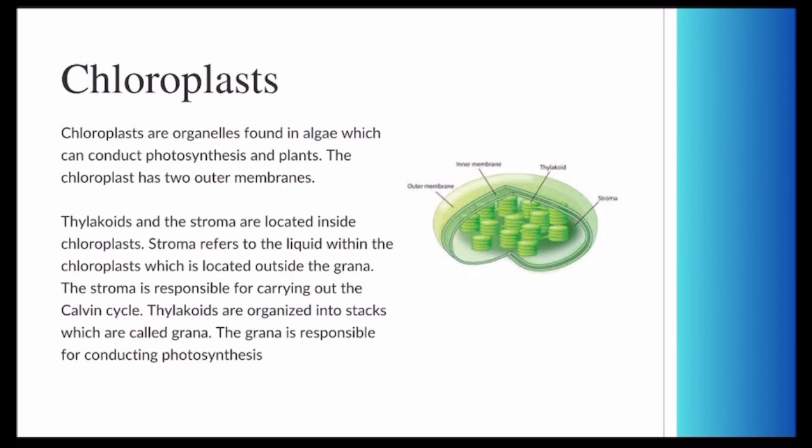Chloroplasts have two membranes. They're basically composed of the outer membrane, inner membrane, and thylakoids, which are these disc-like shapes that you see here, which are organized into these stacks called the grana, and which are surrounded by the stroma, which is a liquid surrounding it. The stroma is responsible for carrying out the Calvin cycle, while the thylakoids are responsible for conducting photosynthesis.